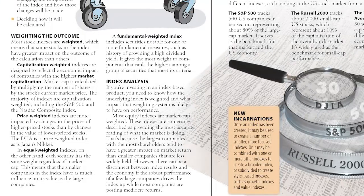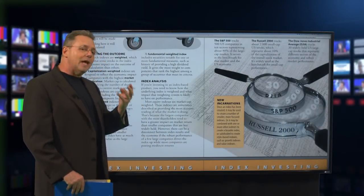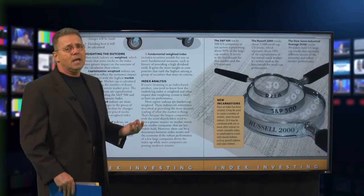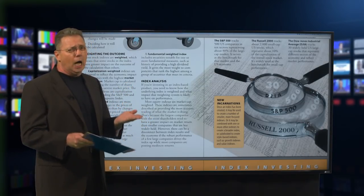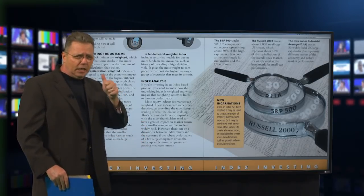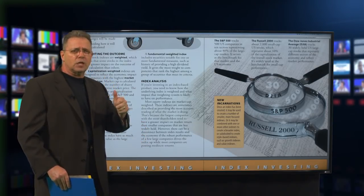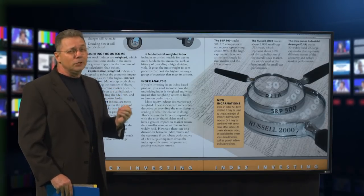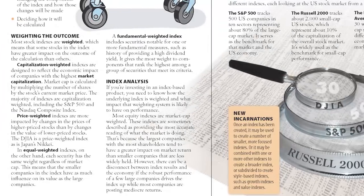Price-weighted indexes are more impacted by changes in the prices of higher-priced stocks than by changes in the value of lower-priced stocks. The Dow Jones average is a price-weighted index, as is the Japanese Nikkei index. Every day we see the Dow Jones, and if you look at it you're getting a thumbnail sketch — a bullet outline — of where the market is and where it's going. That's a pretty good indicator.